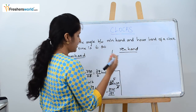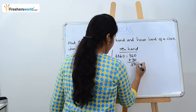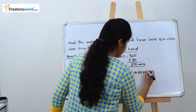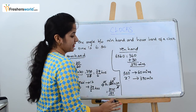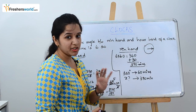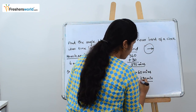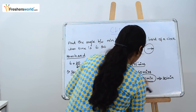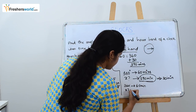Now for the minute hand, we convert everything to minutes. We have 6 hours into 60, which is 360, plus 30 minutes, giving 390 minutes total. The minute hand moves 360 degrees every 60 minutes. We have 390 minutes here, so we need to find how much it moves. Since the full rotations cancel out, we only need to find the angle for the remaining 30 minutes.